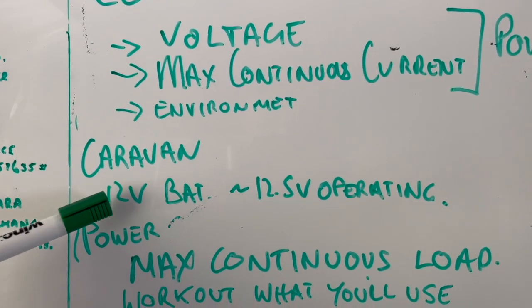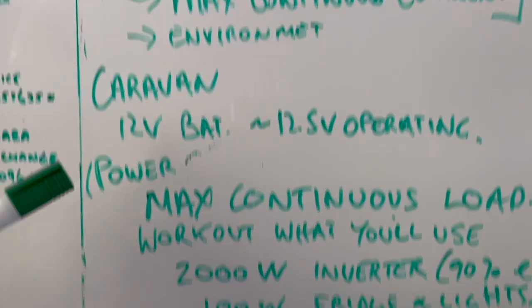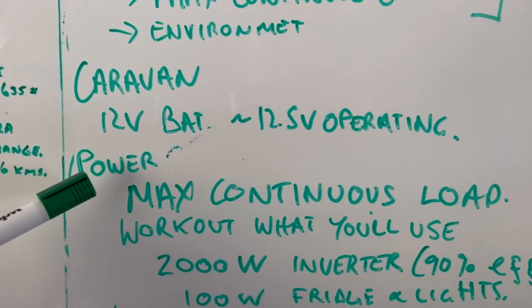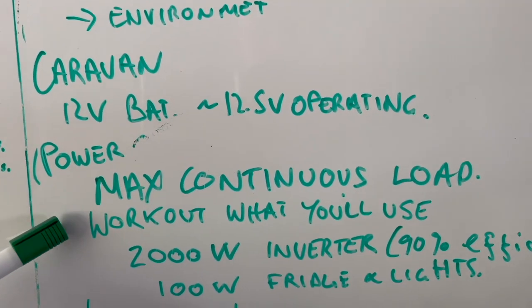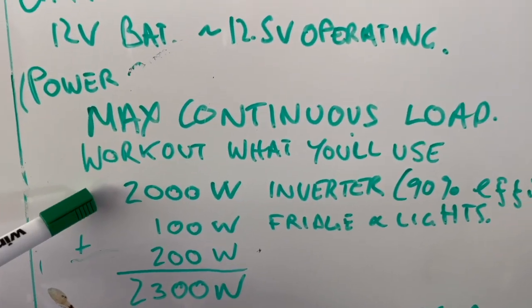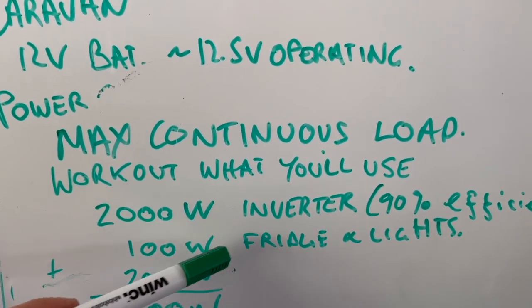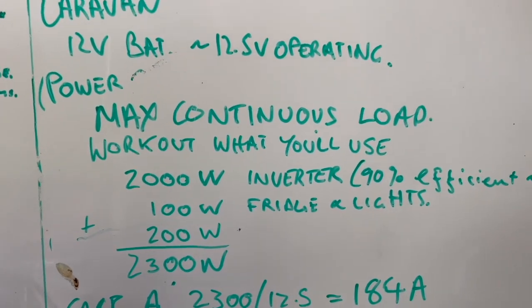Caravan, we're doing this scenario, 12 volt battery, say 12.5 volt operating, we need to figure out a power, a load. So we need the maximum continuous load, work out what you will use. In this scenario, I'm saying we're using a 2000 watt inverter, we've got 100 watts of fridge and lights in the caravan, that's the maximum that we're going to be all using at once.